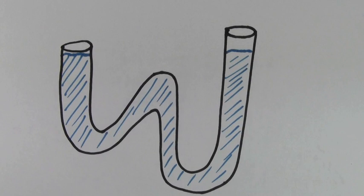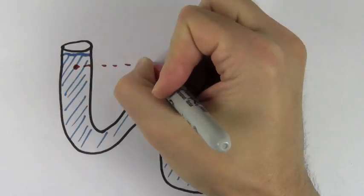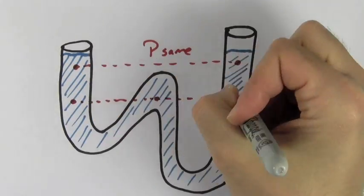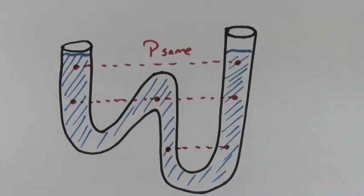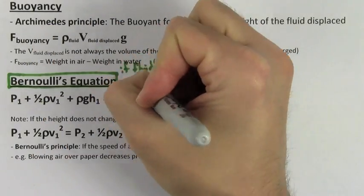The pressure in a fluid does not depend on the shape of the container. It only depends on how far you are below the surface of the fluid. Points at equal depth will all have the same pressure for a fluid at rest. If the fluid is moving, you have to use Bernoulli's equation.